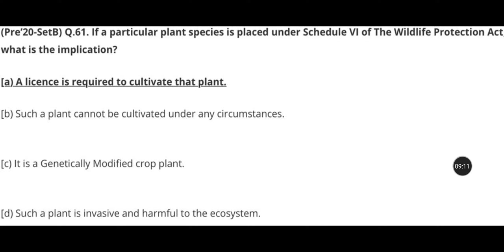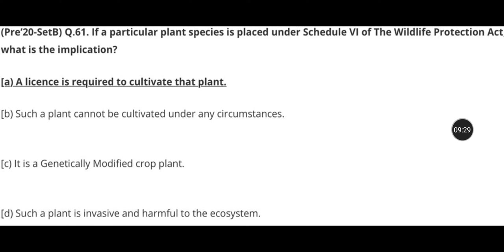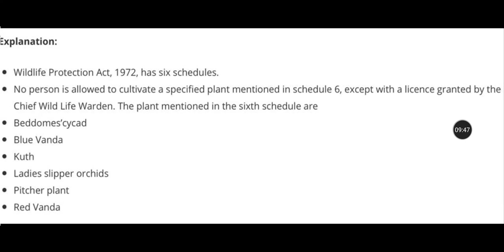The Pitcher Plant is an insectivorous plant that attracts insects using a foul smell. So option D (invasive plant) can be eliminated. We are left with two options. The answer is: a license is required to cultivate that plant. Under the Wildlife Protection Act, no person is allowed to cultivate a specified plant mentioned in Schedule 6 except with a license granted by the Chief Wildlife Warden of the state.